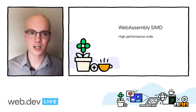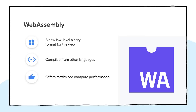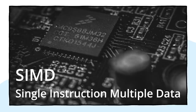First, I want to talk about WebAssembly SIMD and how it can provide really highly performant code. Most of you have probably heard about WebAssembly already, but as a recap, WebAssembly is a new low-level binary format for the web that is compiled from other languages and offers maximized performance. This means you can take something like C++ or Rust and compile it into WebAssembly before shipping it to the client. WebAssembly has been out for a while, but we're continuing to expand it with functionalities such as SIMD, which stands for Single Instruction Multiple Data.